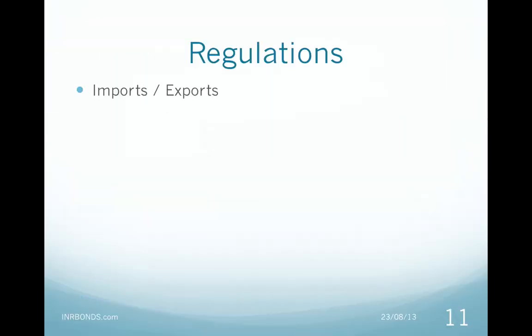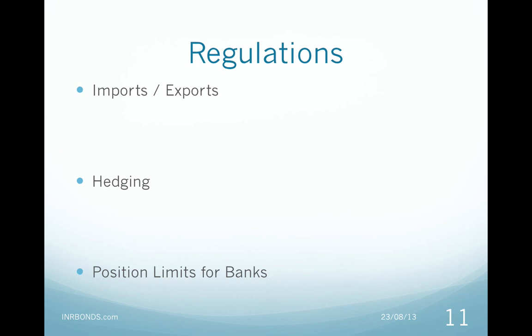Regulations: RBI can make importers hedge their foreign exchange requirements or make exporters repatriate their earnings depending on market conditions. When currency markets are unstable, RBI will ask importers to hedge and exporters to repatriate earnings. RBI will also place limits on hedging by FIIs or will not allow rebooking of cancelled forward contracts to reduce speculation. RBI can ensure that FIIs, importers, and exporters' hedged positions are based on underlying flows and not on anticipated flows. RBI will also make banks lower their exposure to speculative currency trades in the spot, futures, and forward markets.